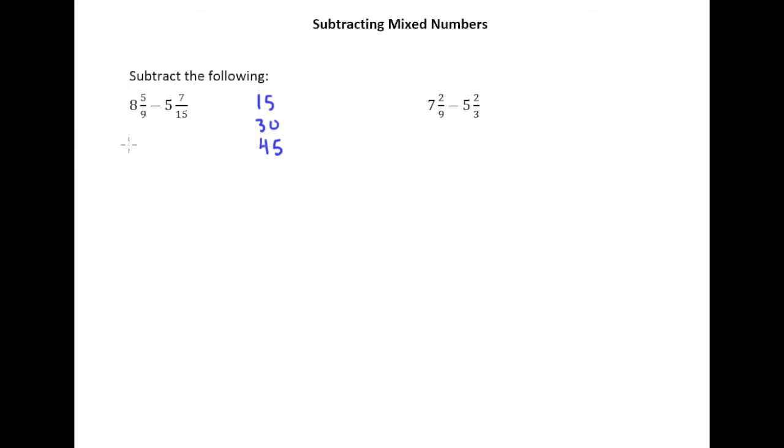So I can take each of these fraction parts and make them have the denominator of 45. We'll have 8 and something over 45 minus 5 and something over 45. We know that 9 times 5 is 45 so I multiply the top by 5, and 15 times 3 is 45 so 7 times 3 on top of the other fraction.